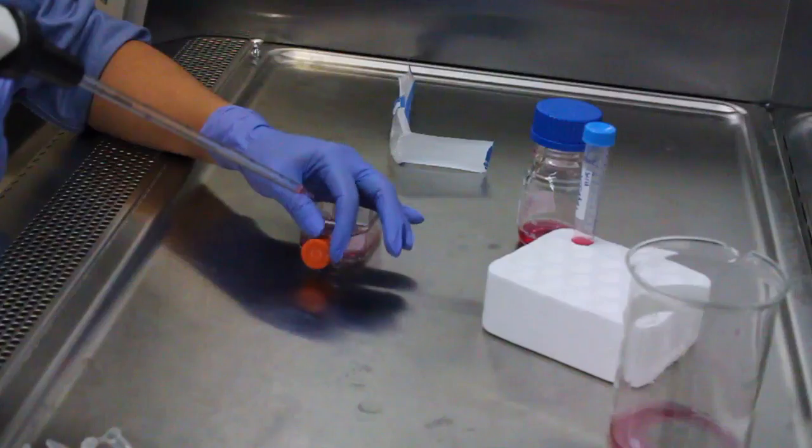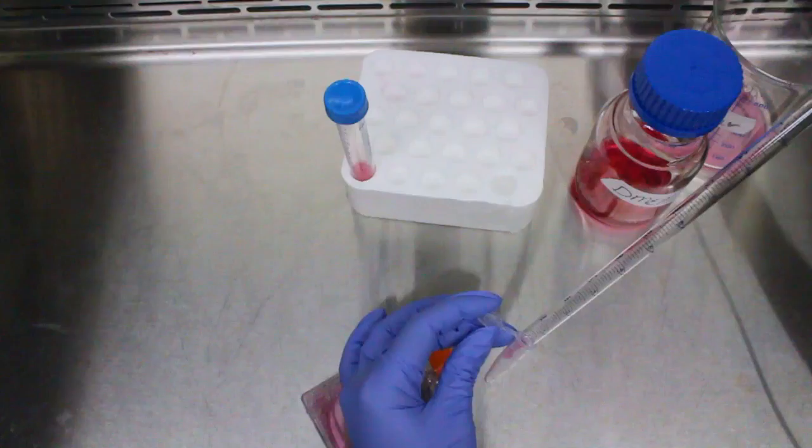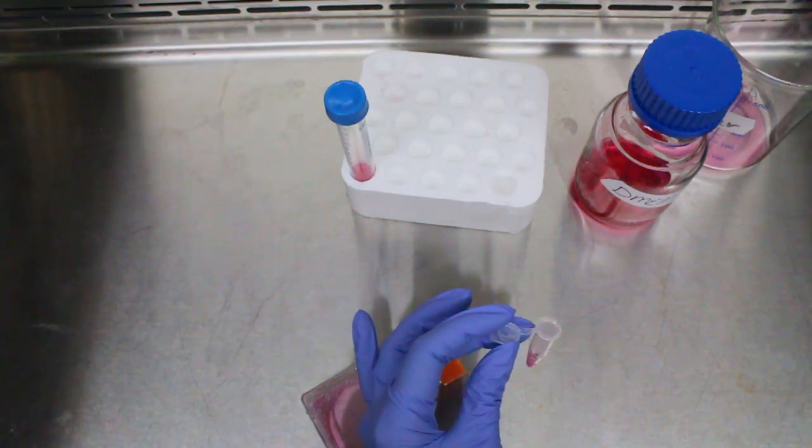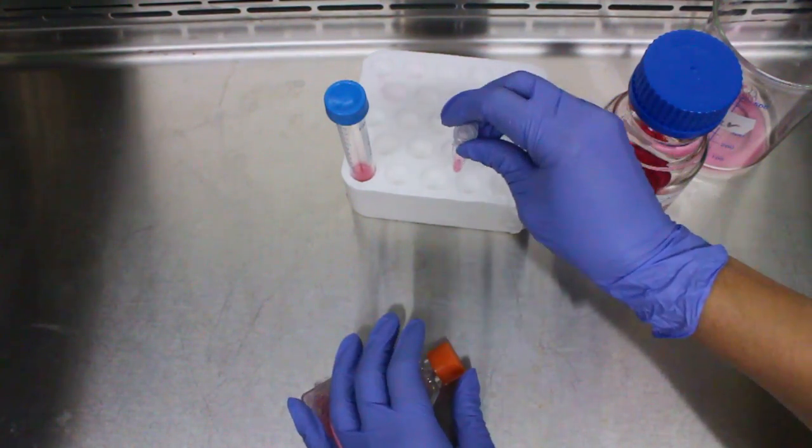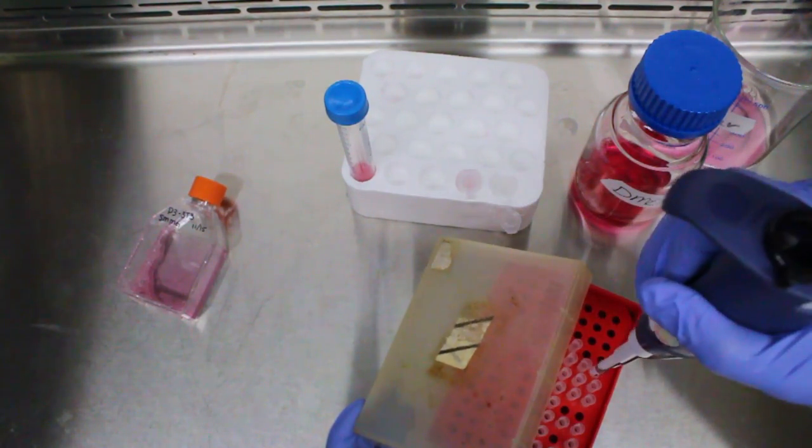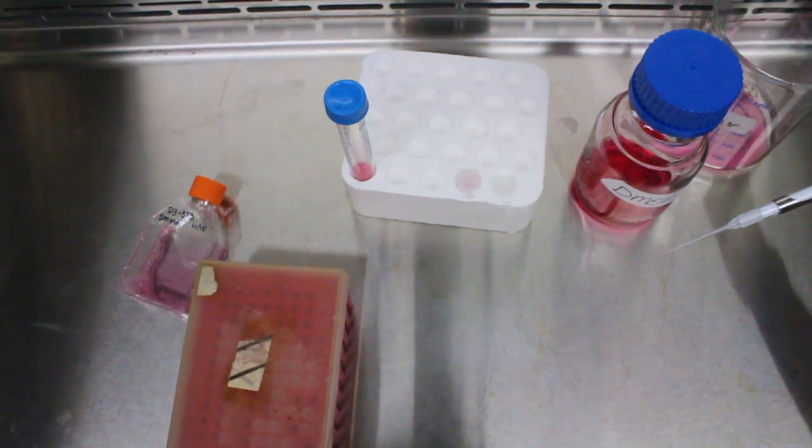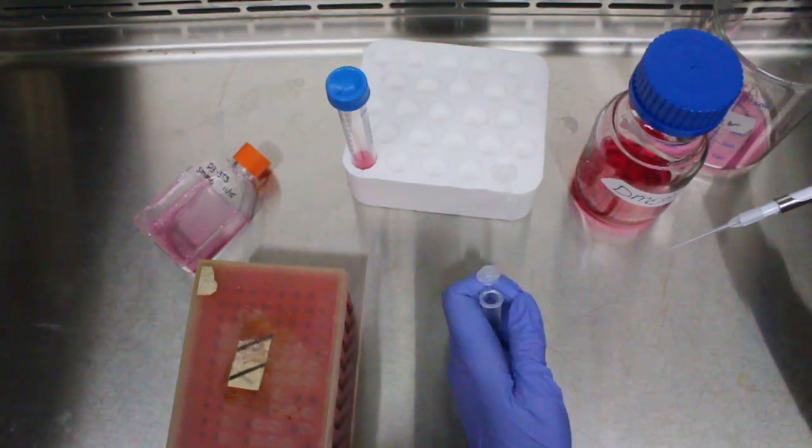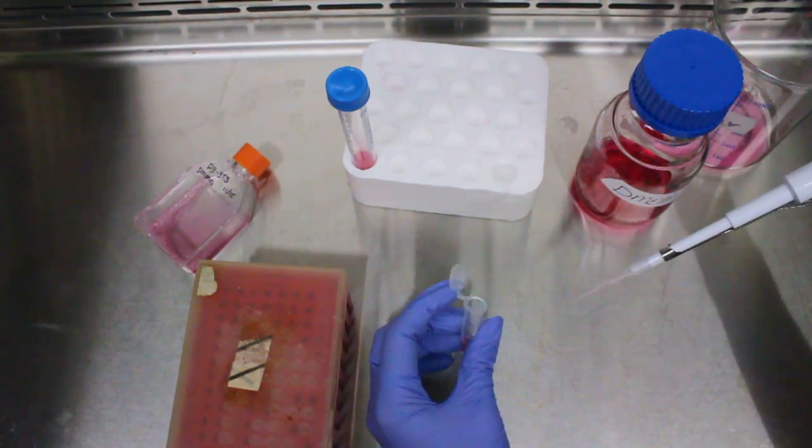In order to properly assess cell count, remove a small amount and place it into an MC15 tube. Using a micropipetter, grab a new pipette tip and be sure that it is set to 10 microliters. Remove 10 microliters of the sample from the MC15 and place it into a new MC15.